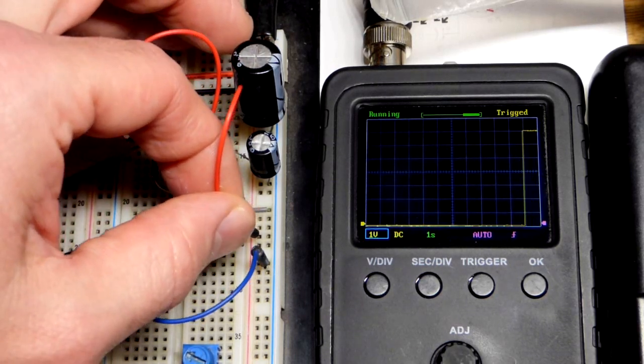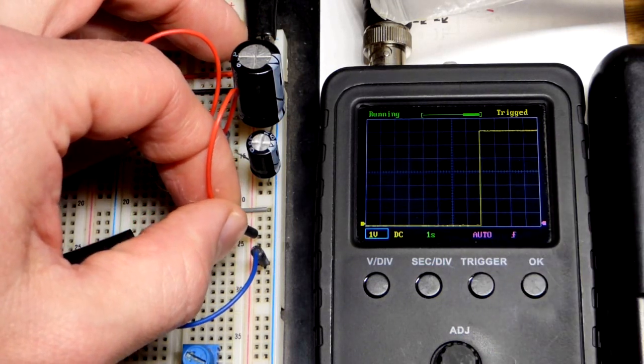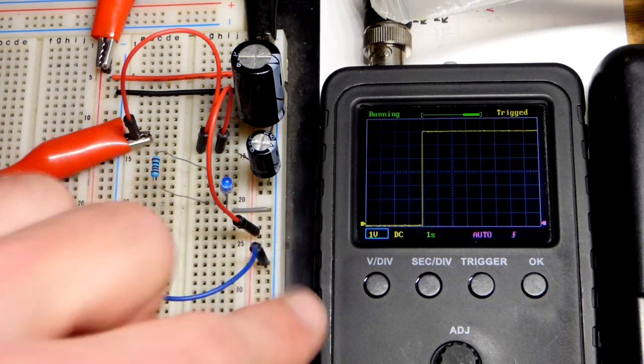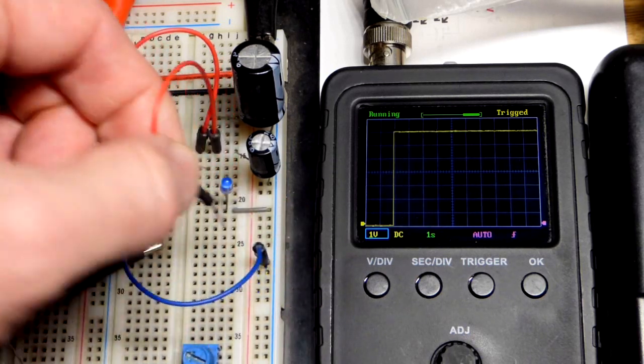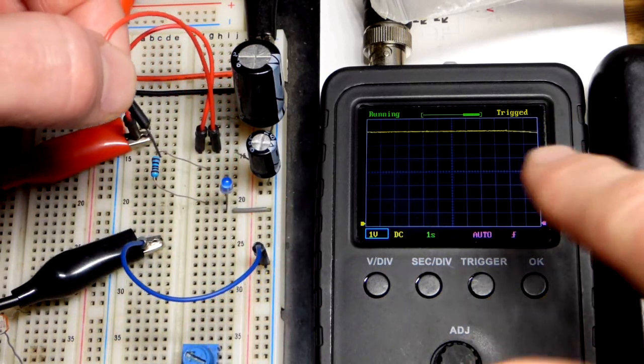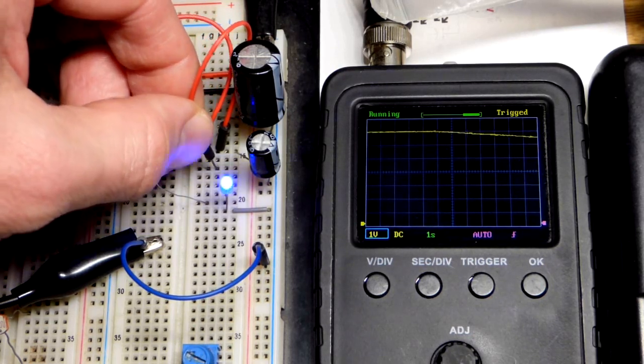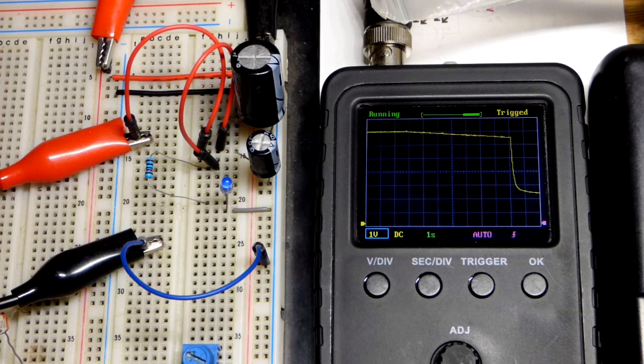We're going to instantly charge the 100 microfarad capacitor again by connecting it directly to the positive supply. The negative side of the capacitor is to the negative supply. And it's going to drift down a little bit over time again because this oscilloscope doesn't have a ton of resistance. It's somewhat high.